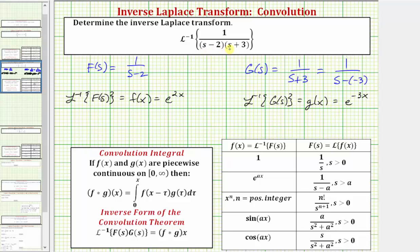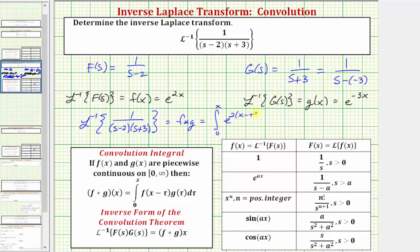Now we can determine this inverse Laplace transform by determining the convolution of F and G. The given inverse Laplace transform is equal to the convolution of F and G, which is equal to the integral from zero to x of f(x minus tau), which should be e raised to the power of two times the quantity x minus tau, times g(tau), which should be e raised to the power of negative three tau, d tau.